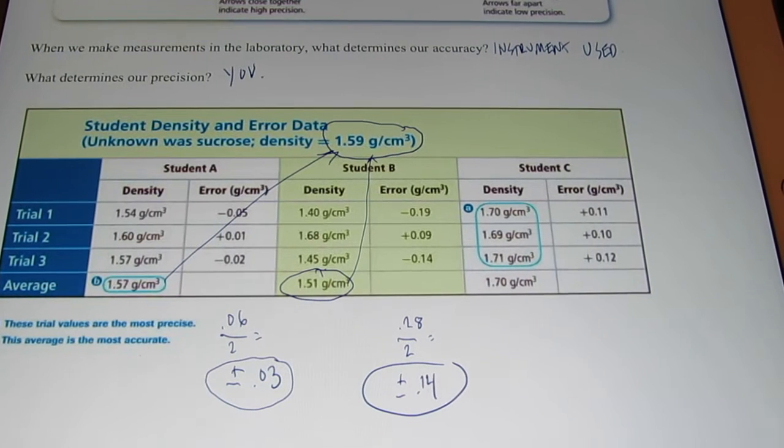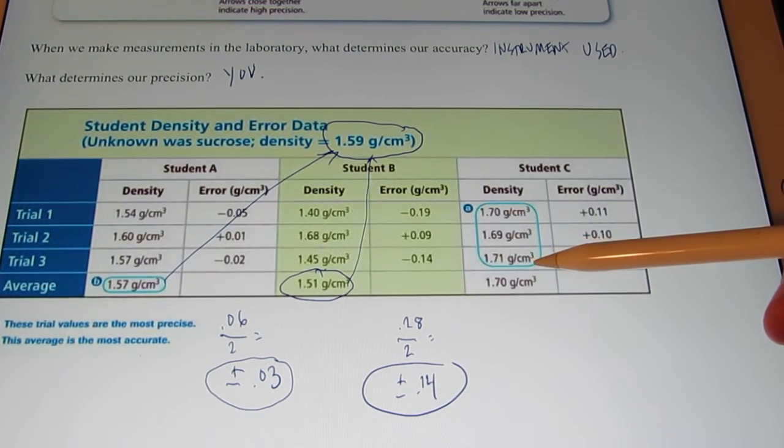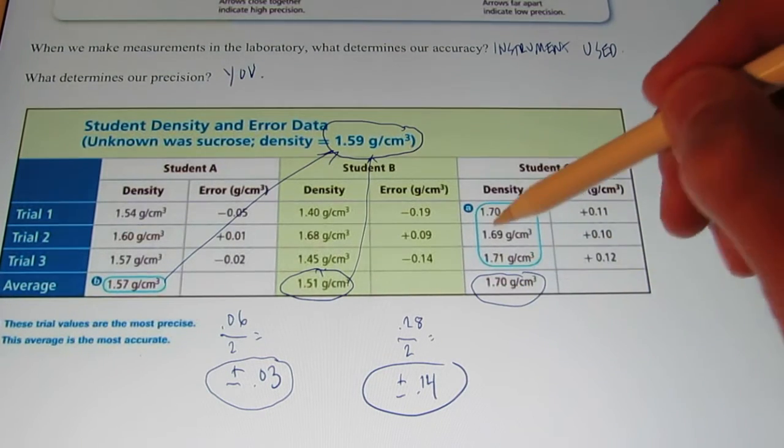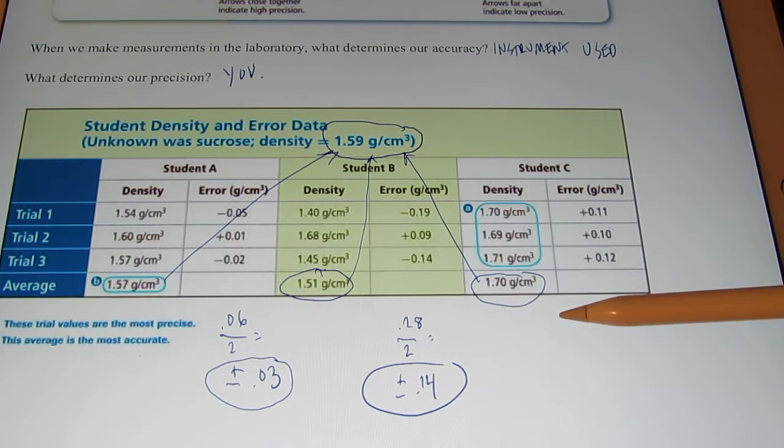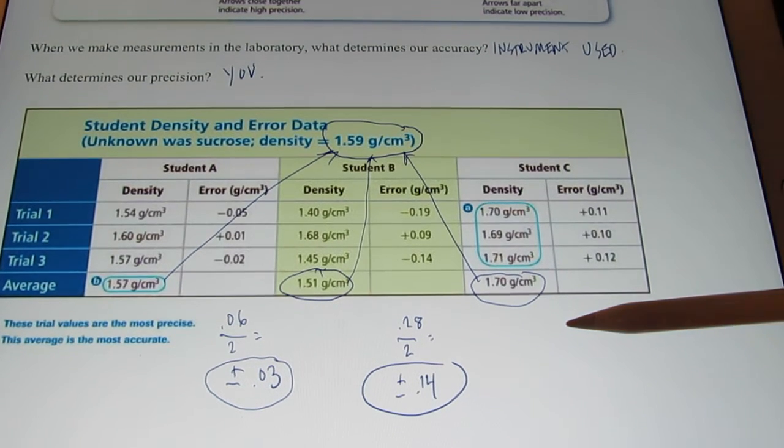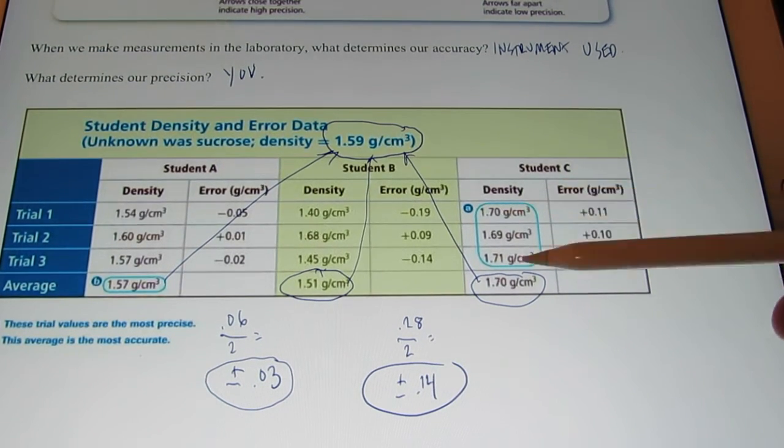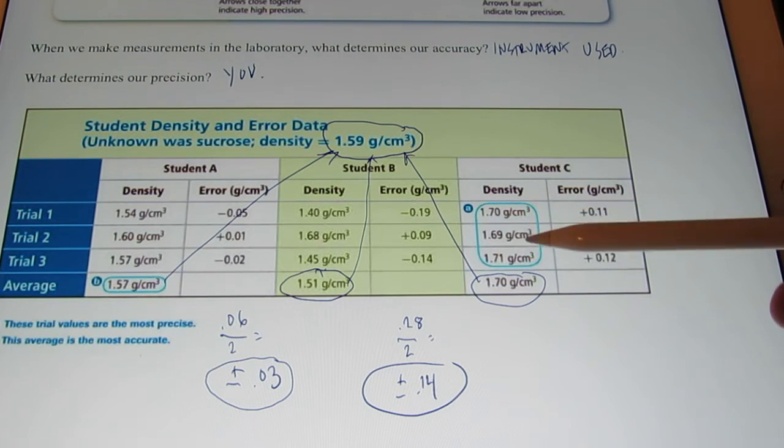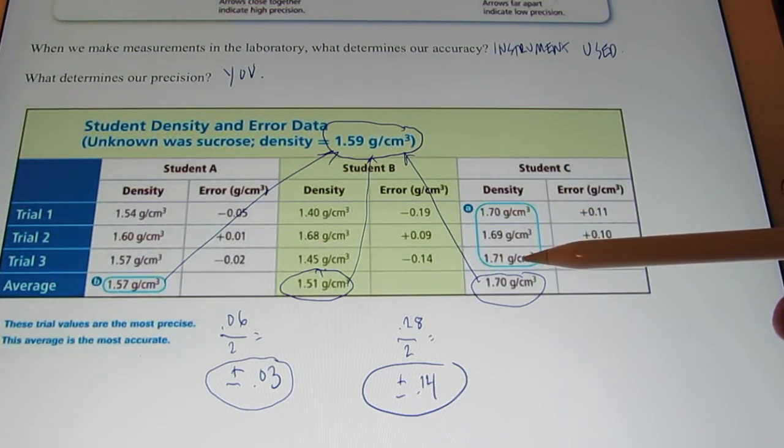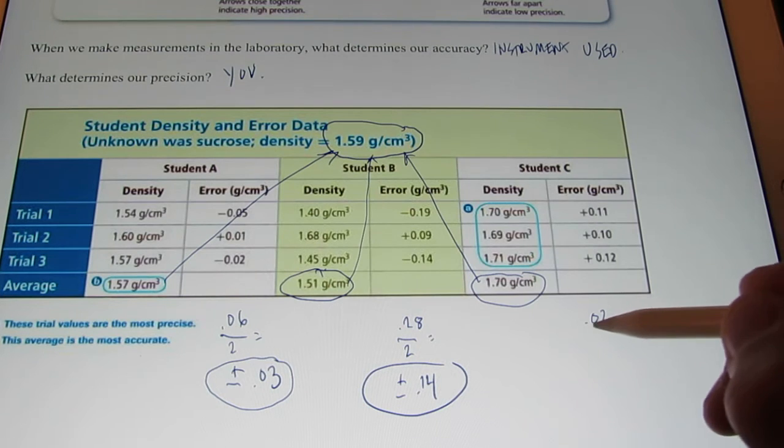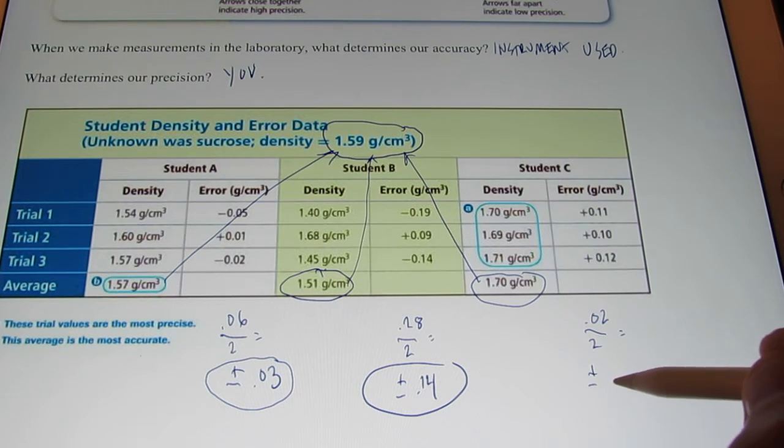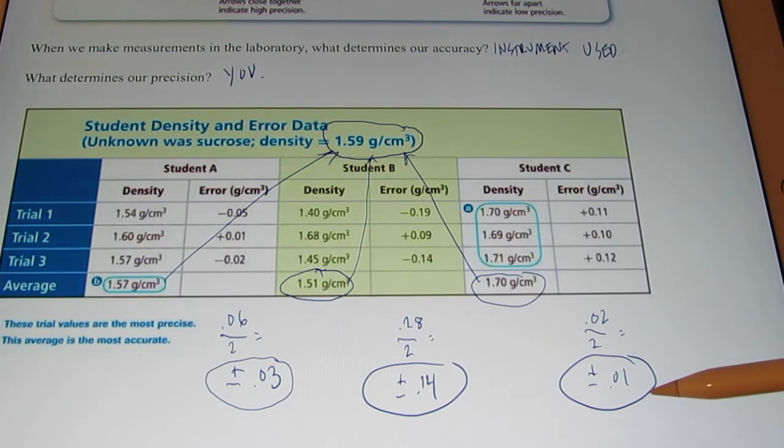Let's take a look at student C. Student C got 1.70 the first trial, 1.69, 1.71 the third trial for an average of 1.70. So obviously the accuracy of student C was the worst of the three. Let's take a look at their precision. Now, once again, precision is going to be how close the set of measurements are to each other. So if I look at my range here, my high is 1.71, my low is 1.69. So my range is only 0.02. If I divide that by two, I get plus or minus 0.01. So while this student may not have been very accurate, they were pretty darn precise.